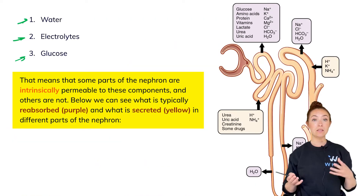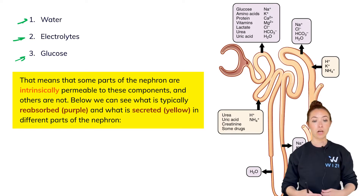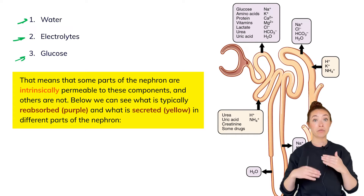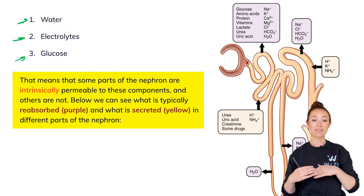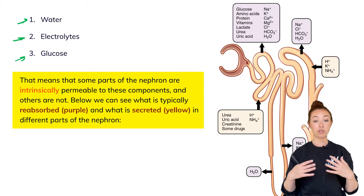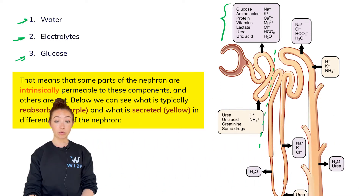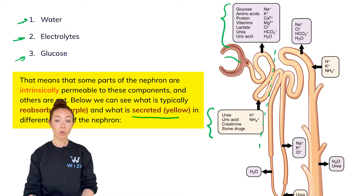Some parts of the nephron are intrinsically permeable to some of these components while others are not. In this image to the right you can actually see the entire nephron and how different sections have different permeabilities. What is shown in purple is what is actually reabsorbed at that section. For example, here we have the PCT, the proximal convoluted tubule — all of this stuff is reabsorbed there. What is shown in yellow is actually secreted into the filtrate as it moves from Bowman's space into the PCT and so on.